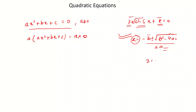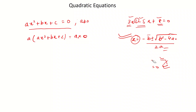If you start with 3 equals 2 and multiply both sides by zero, you get 0 equals 0, which is true — but that doesn't make 3 equals 2 true. So multiplication by zero on both sides is inadmissible. That is why a not equal to zero is assumed, and hence we multiply by a on both sides.